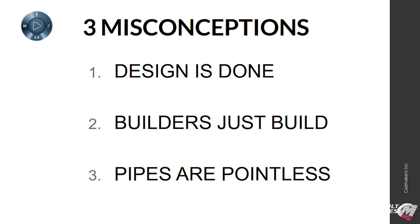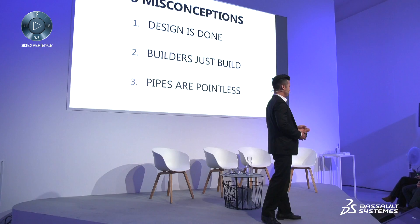Number one: I thought that just like the automotive industry, design was done. Before designing a car, they work out every single nut and bolt, every single kink — they even 3D model it. Before building the car, they have the full design completely figured out. But what we're seeing in the past 200 projects is that 2D drawings and even 3D models are simply design intent — a guideline to go into construction.